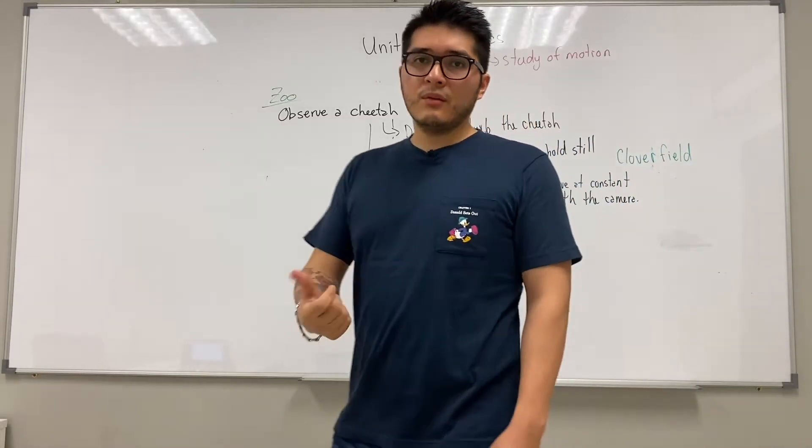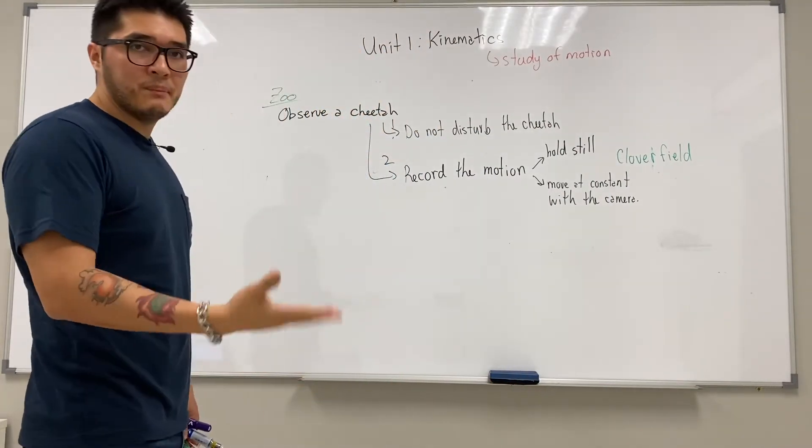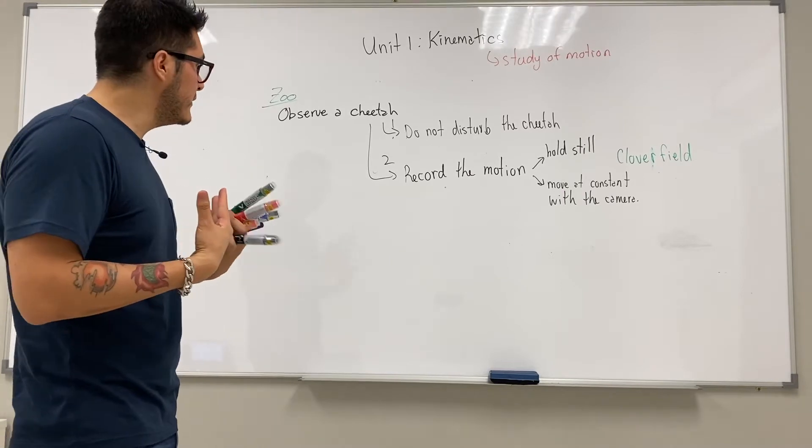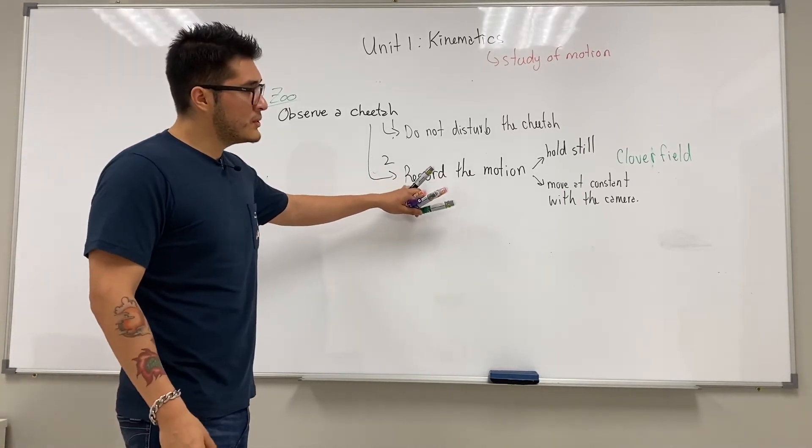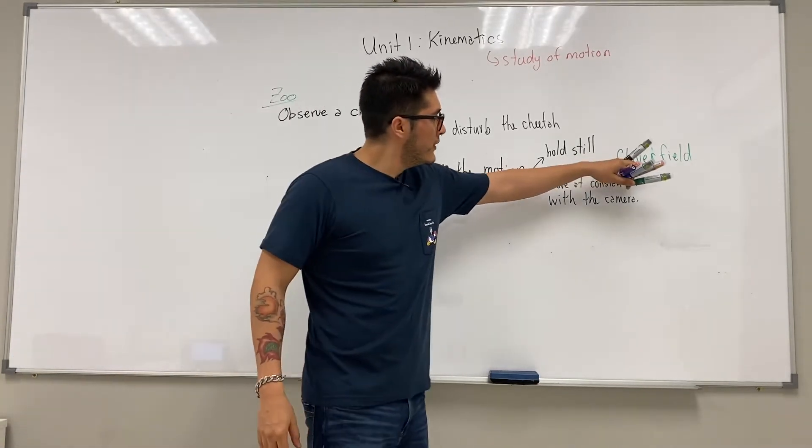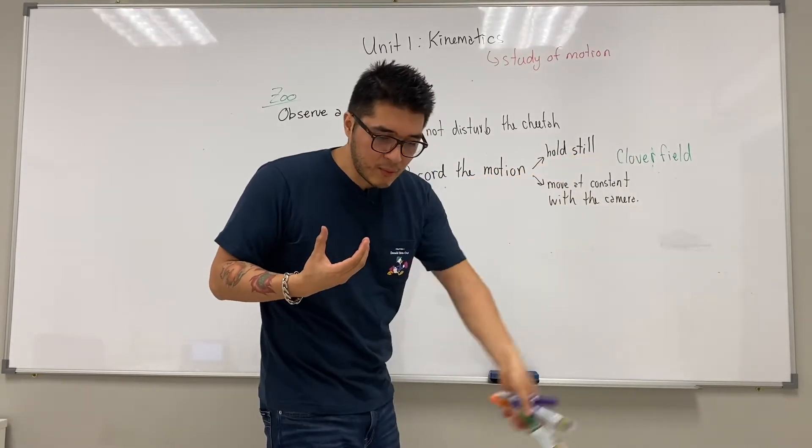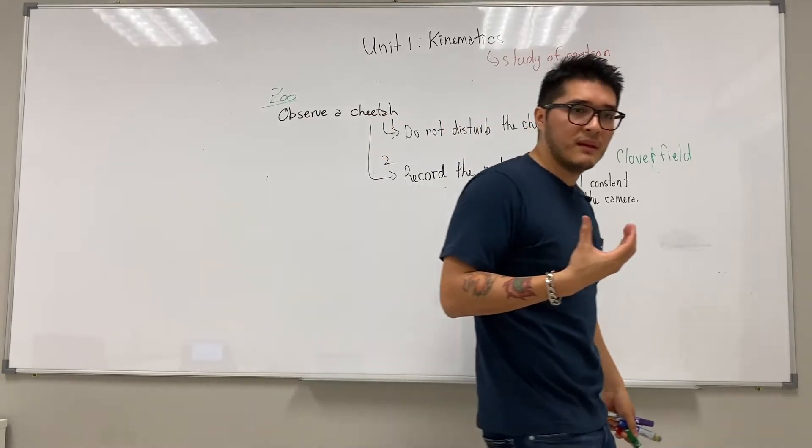So to observe the cheetah in the wild, don't disturb it. You don't want to influence the system. You want to be an observer and record the motion. Take a video of the film, so hold the camera still. Or if you do need to move, you could get a rolling cart that goes at the same pace.